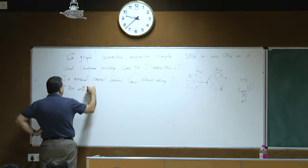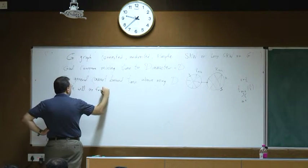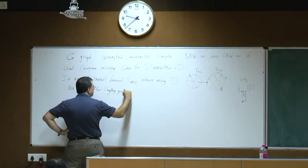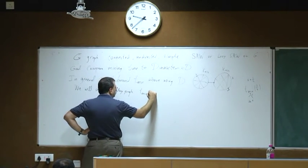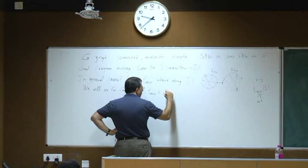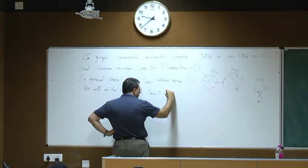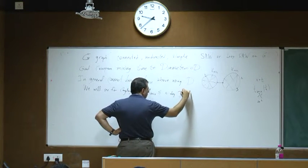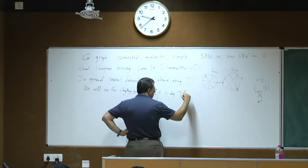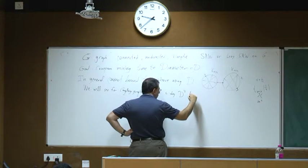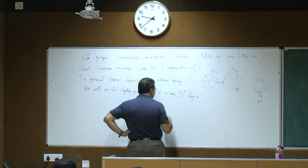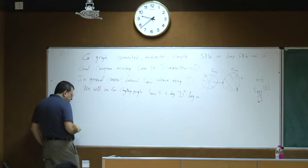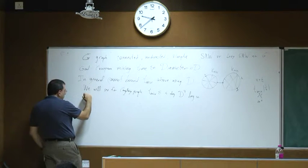However, for Cayley graphs, T_mix is going to be bounded by a constant times the degree times D² times log N.